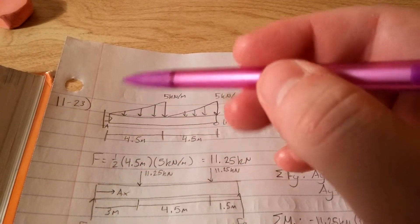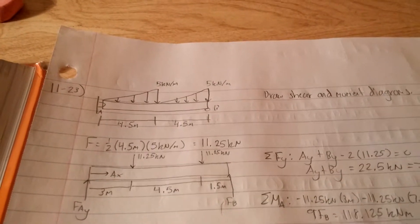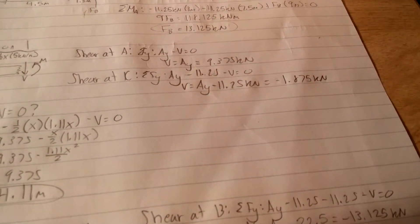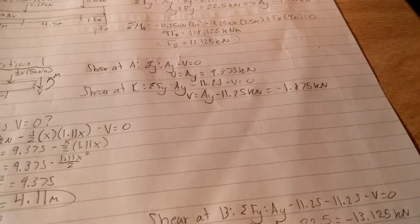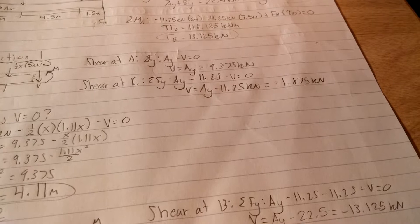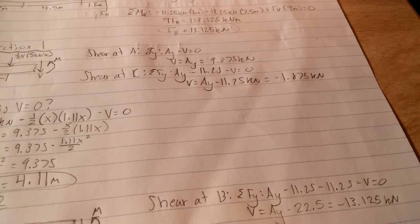We're going to have AY minus 11.25 minus V equals zero. Solve for V, you get AY minus 11.25. You end up getting negative 1.875 kilonewtons.